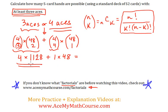Now we have four times 1128 and that's 4512. Plus one times 48, 48. And now we can add them. So there are 4560 ways to have a five card hand that has at least three aces.